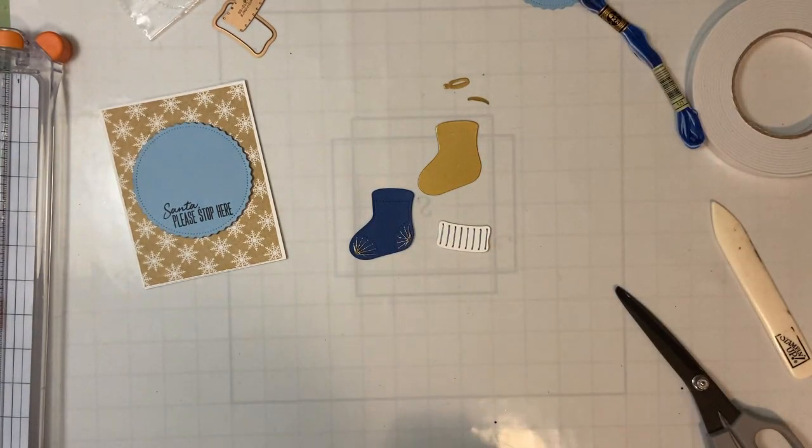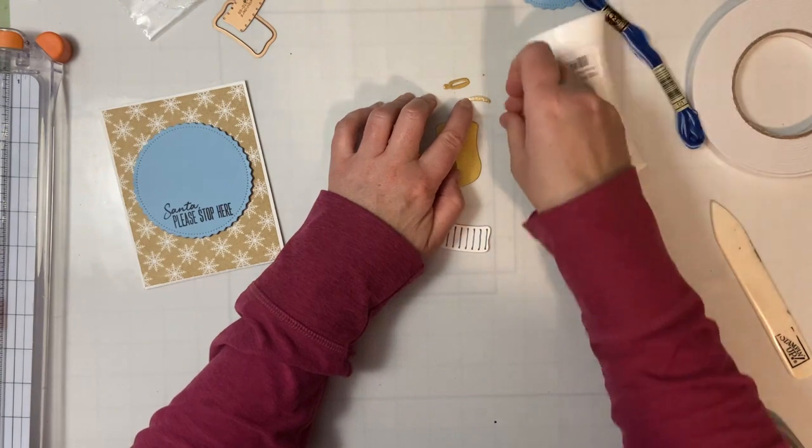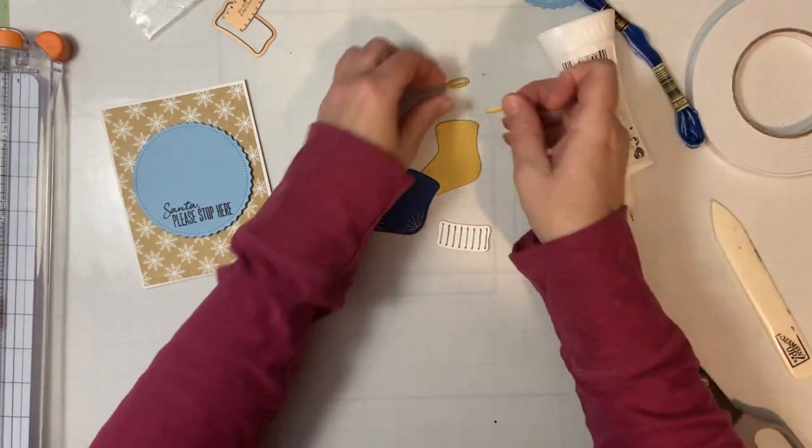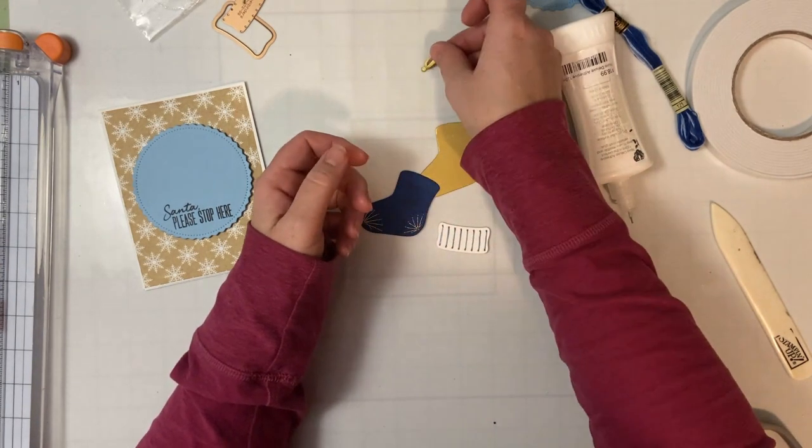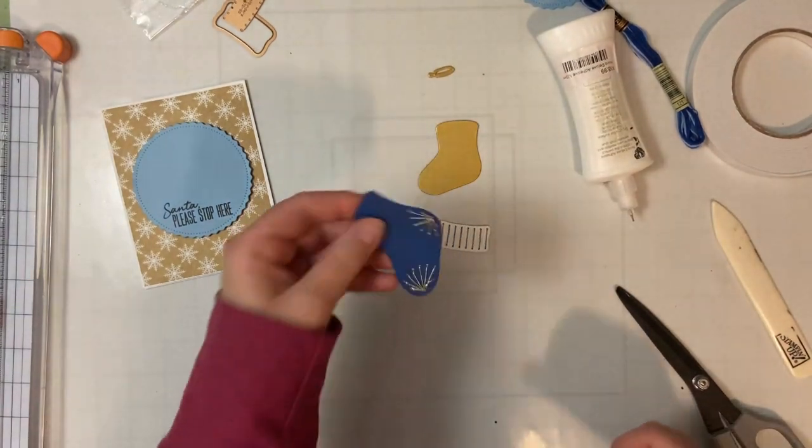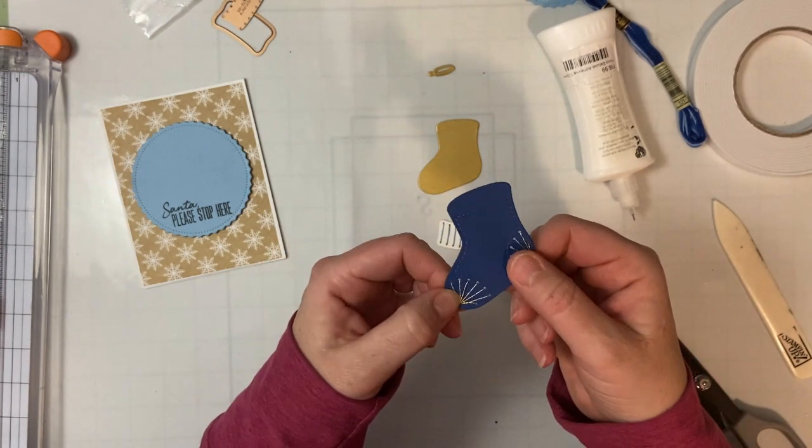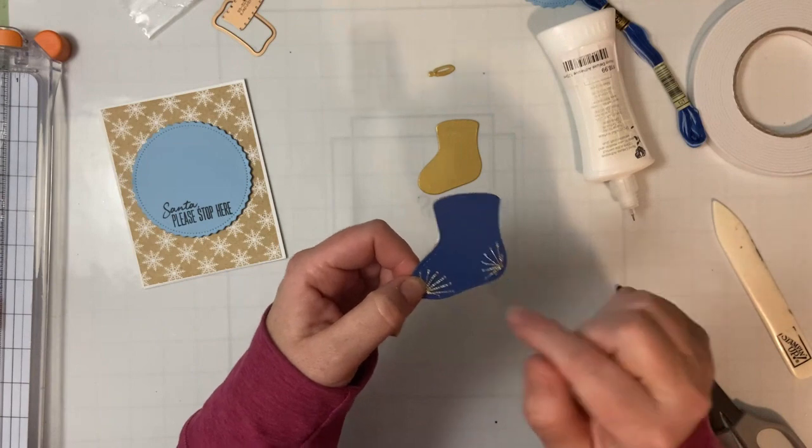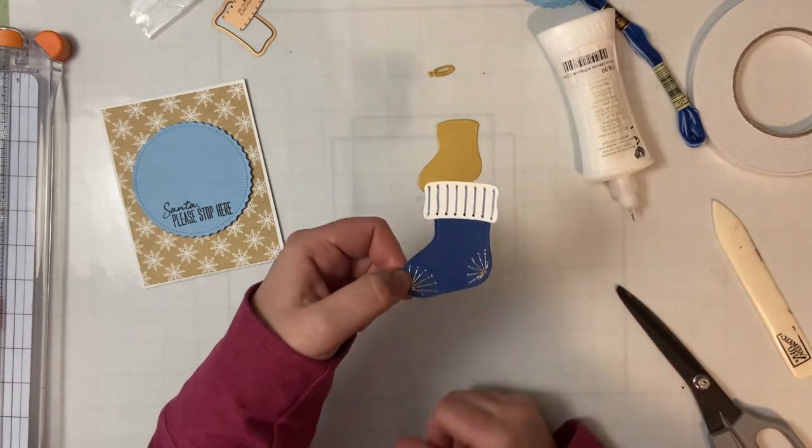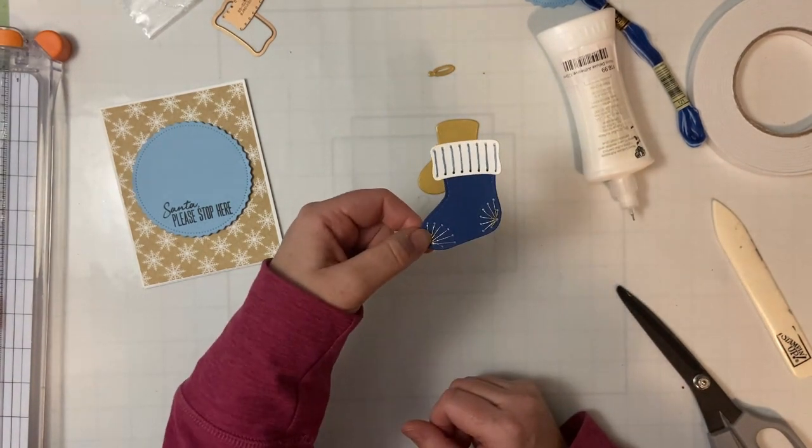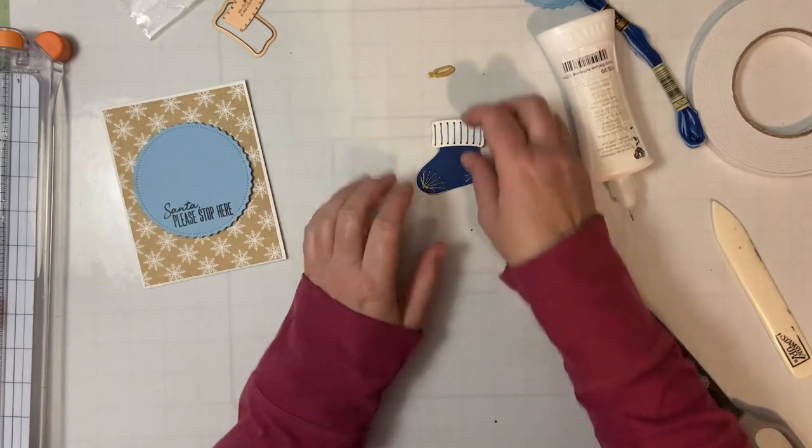But for now we will just glue it together and then just trust the process as well as they say. Trust Spellbinders. Here's the finished stitching on the bottom of the stocking so the toe and the heel. You could do a running stitch around there. I'm not going to do that tonight. And then this is the top with the variegated blue. I think that looks really stunning actually. So we're going to put this on top of the gold and then pop it up on our card.